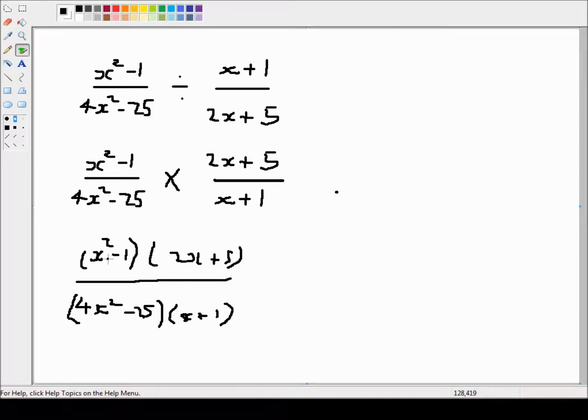Well, x squared minus 1, that's the difference of 2 squares. So that's just x minus 1 into x plus 1 into 2x plus 5. And that's over, again, 4x squared minus 25, that's the difference of 2 squares. 4 is a square number, x squared is a perfect square, and 25 is a perfect square. So this is just 2x minus 5 into 2x plus 5 into x plus 1.